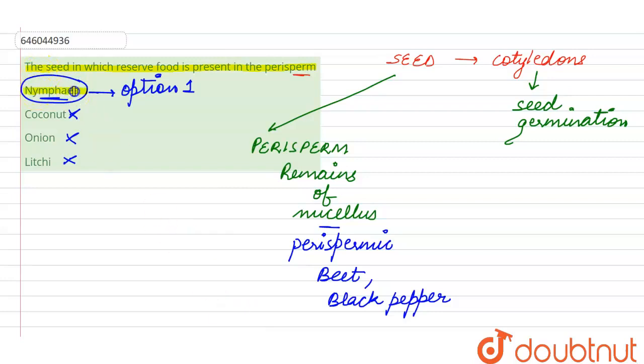We also see that reserve food material may be present in the form of endosperm in certain seeds, and such seeds are called endospermic seeds, such as coconut and castor. These are examples where remains of the endosperm remain inside the seeds.